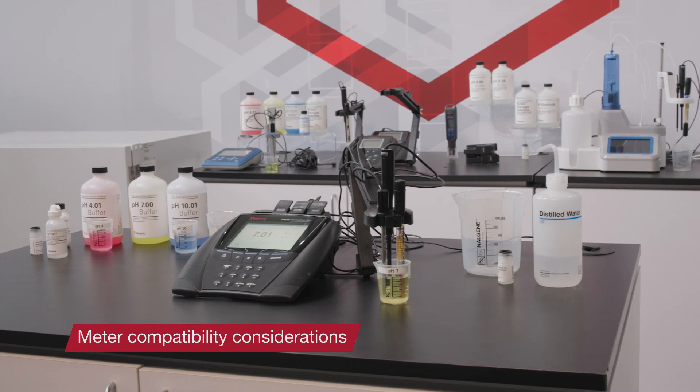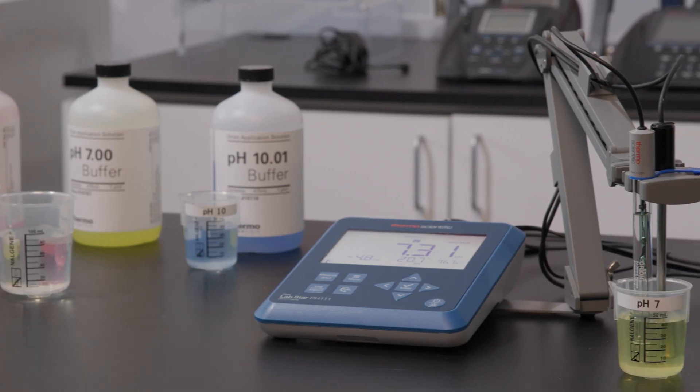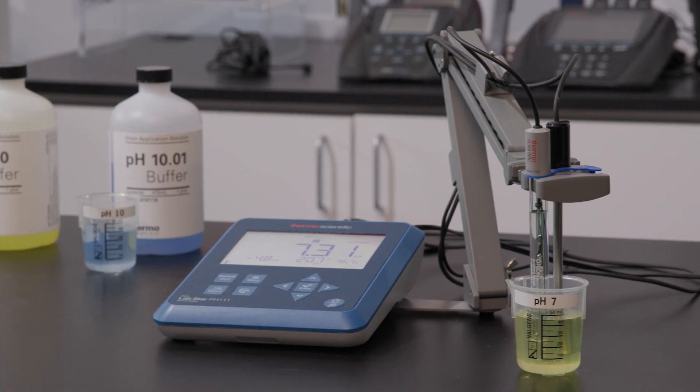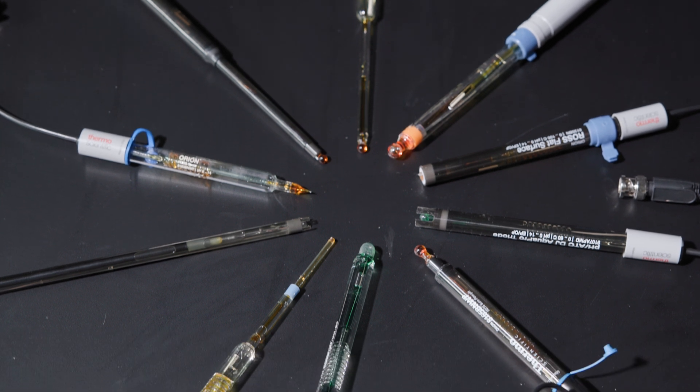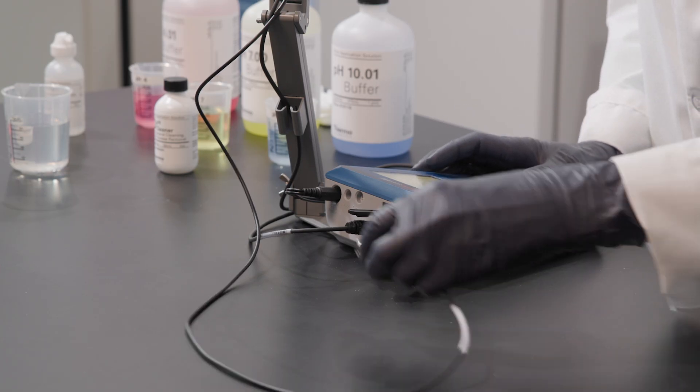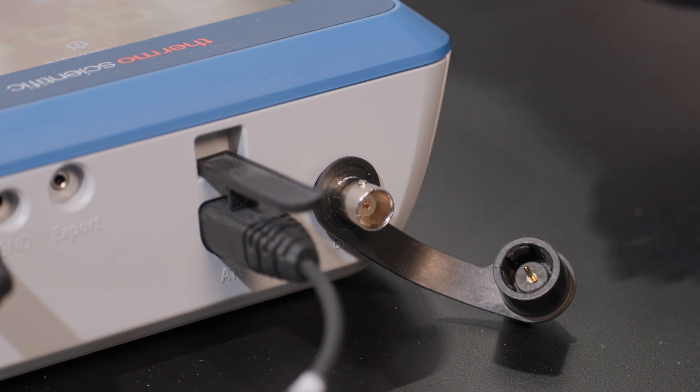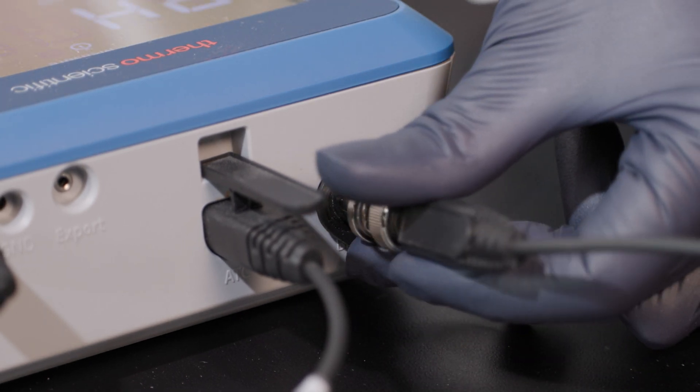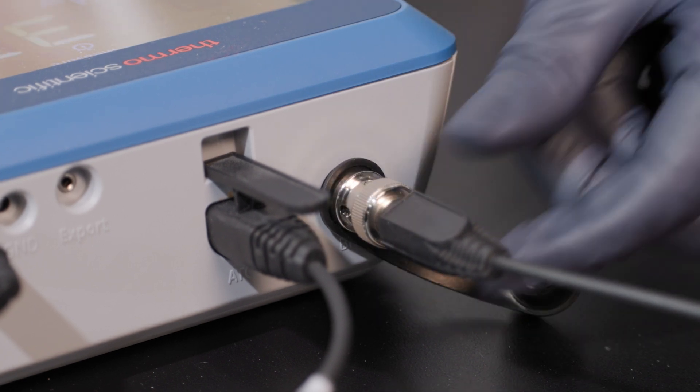A pH electrode is just one part of the pH system. Even with a good pH electrode, if it's not connected to a good pH meter, your readings may be compromised. Not all electrodes will work with every pH meter, so you need to determine that the electrode will connect to your existing meter. The Orion pH electrode family uses a BNC connector for pH electrodes, so they are compatible with all thermoscientific Orion pH meters.